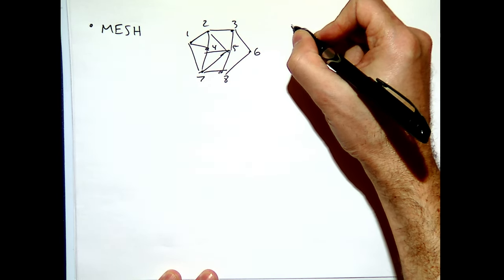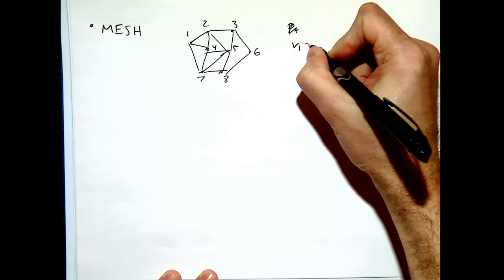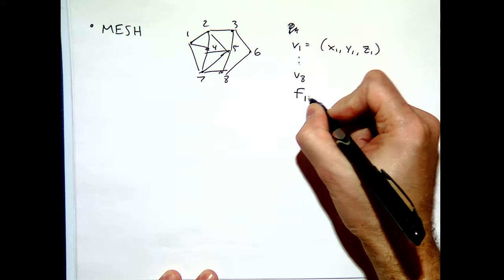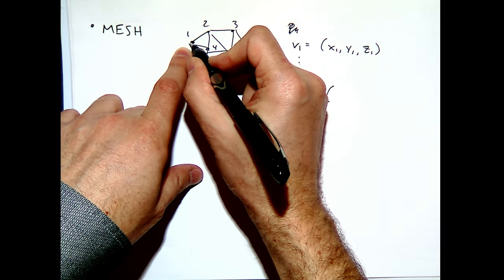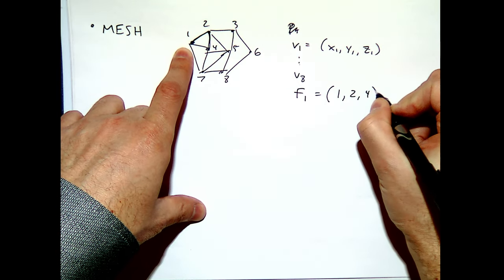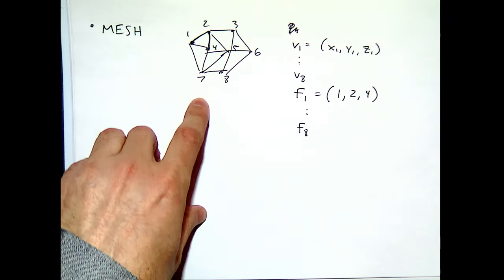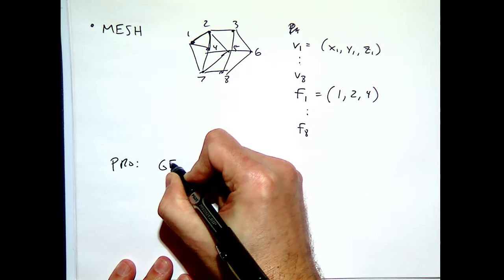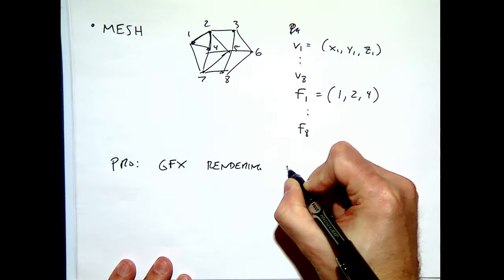The way mesh data is stored: I number the points and have a collection specifying the location of each vertex as an XY location. Then I collect these vertices into faces — for example, the first face is formed by a triangle from point 1 to point 2 to point 4. This is very favorable in some applications because it's a compact representation with explicit connections between faces that you can texture and render. The graphics pipeline was designed to do exactly this.